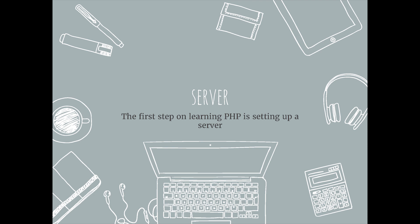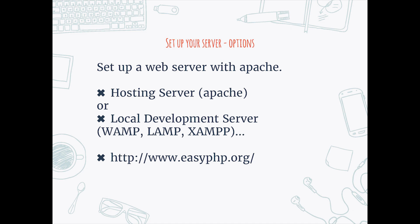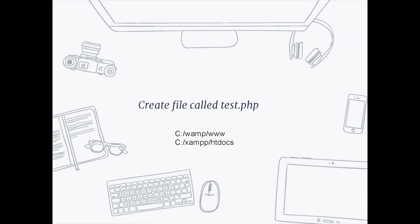The first step of learning PHP is setting up a server. You'll want to set up a server with Apache. You can use a hosting server or a local development server. You can find a lot more information on easyphp.org. The first thing you want to do is create a file in your web server directory — it should be either in your www or htdocs folder, depending on what development environment you set up. You would save your test.php file within that folder. There are a lot of different options like WAMP and XAMPP, so it really depends on what you install.